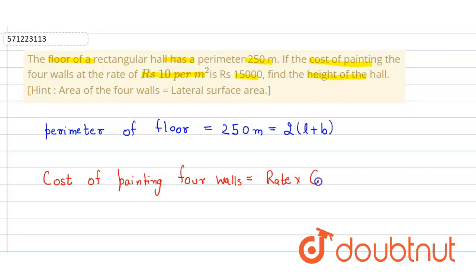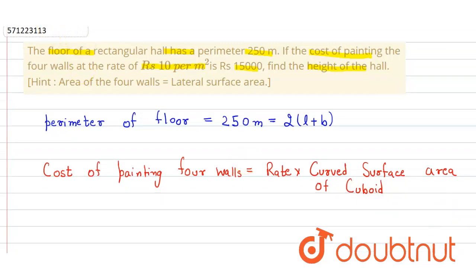So here we just simply put the values. It is given that the cost of painting four walls is 15,000 and the rate equals 10. The formula for the curved surface area of a cuboid is 2(l + b) × height, which we have to find out.